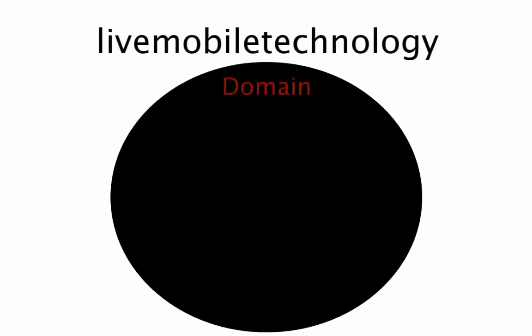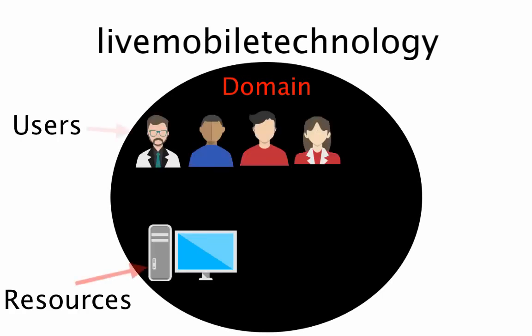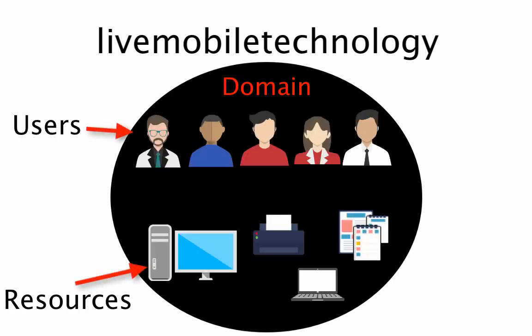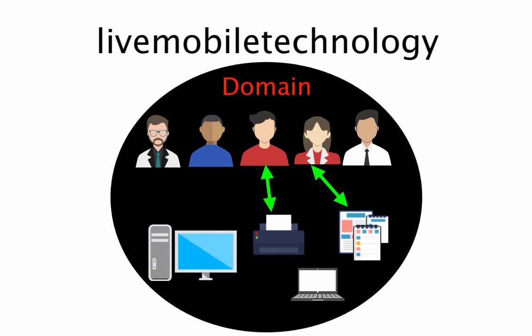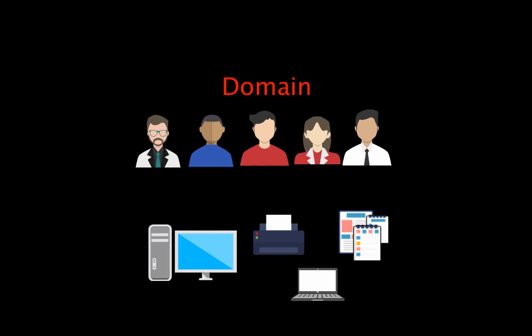Let's start with one network. For this example, the company's name is called Live Mobile Technology. Here's a diagram of a domain, and in that domain are users, resources, and a network — users such as accounting, tech department, sales department, managers, etc. All the users in Live Mobile Technology domain can access resources in this network, as long as the users are given permission to do so. All the users in Live Mobile Technology belong to one domain.